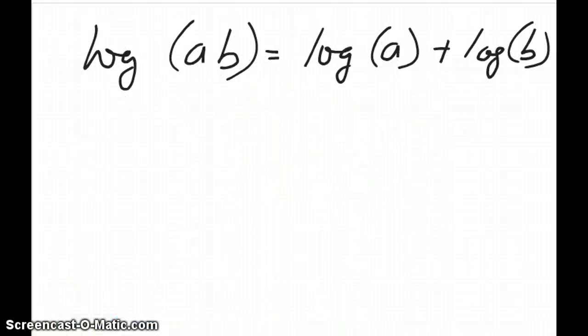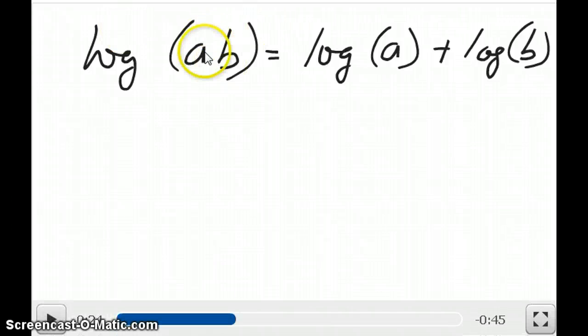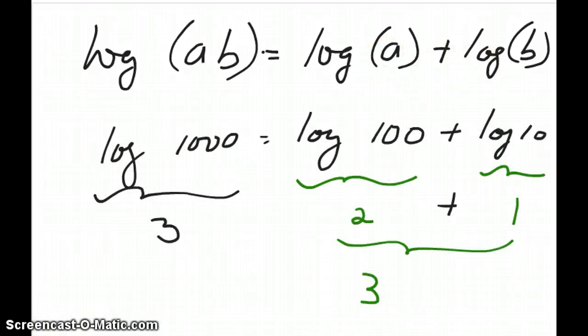Similarly, when we multiply the arguments of a log function, for example AB, it is the same as taking the sum of the two logs. This is written as log of A times B is equal to the log of A plus the log of B. This property can be shown fairly easily with the following example.